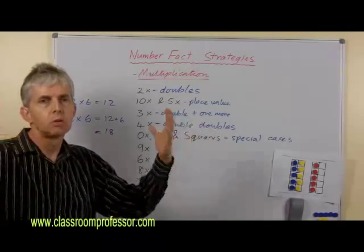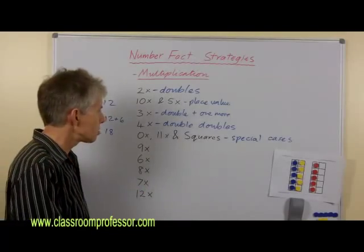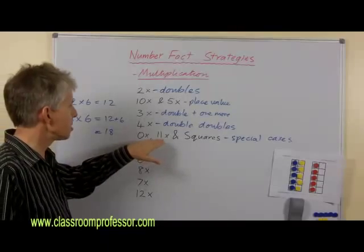One times it's one lot of something or lots of one. And again, that's straightforward. That's the identity for multiplication.